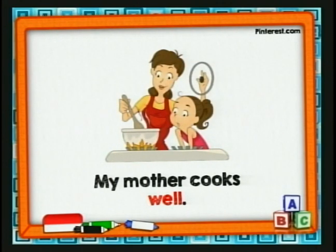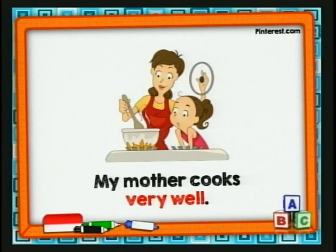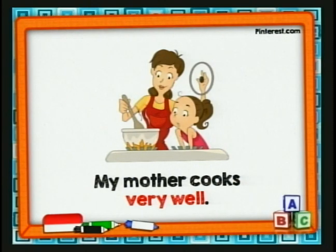Otro ejemplo: 'My mother cooks very well' — mi mamá cocina muy bien. Observen que en este caso tenemos dos adverbios: very, que quiere decir muy, y well, que quiere decir bien. Esto significa que los adverbios también pueden modificar y hacer que otros adverbios sean más fuertes. My mother cooks very well.